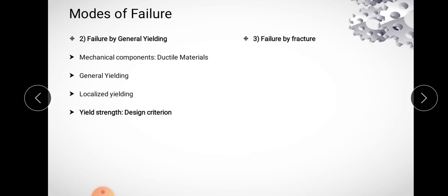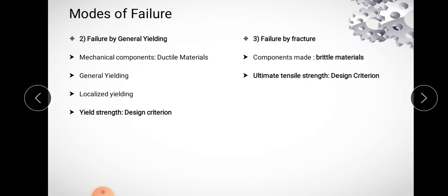Failure by fracture applies to components made of brittle materials. These do not function satisfactorily because of sudden fracture without any plastic deformation - the failure is sudden and total. In such cases, ultimate tensile strength is the important material property used to determine the dimensions of the component. In contrast, for general yielding of ductile materials, yield strength is the important property used to determine the dimensions of the component.